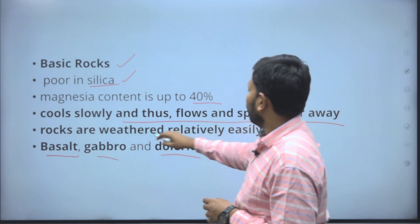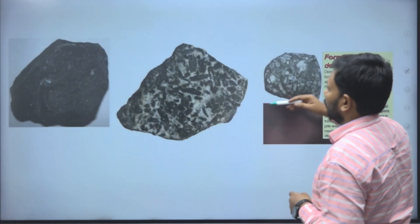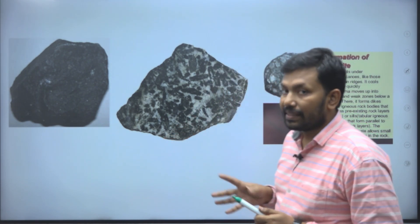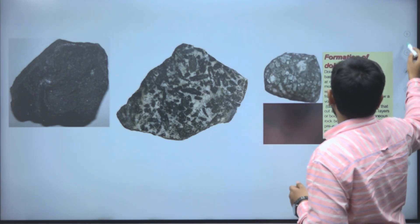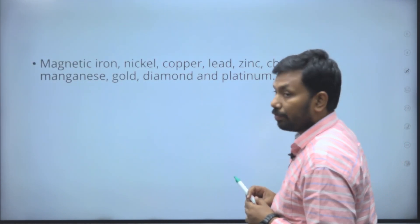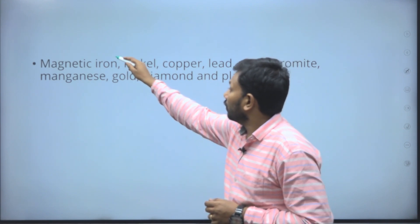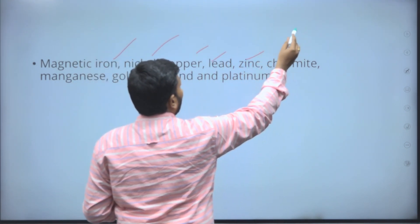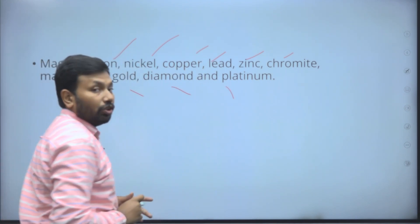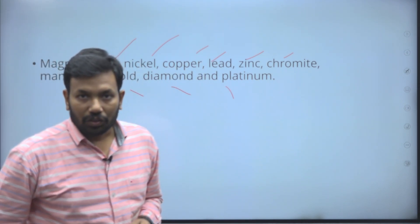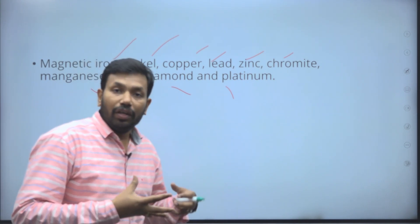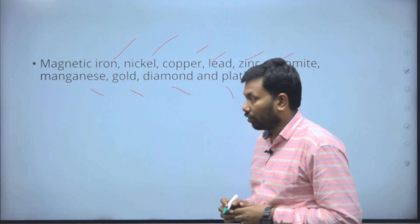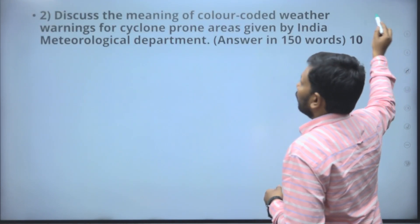I will show you pictures for your understanding of how these rocks look. You can write about their texture. Also, because the question asks about importance, note the chemicals present: nickel, copper, zinc, chromium, lead, manganese, gold, diamond, and platinum — all found in igneous rocks because high pressure and temperature cause chemical composition to form these types of minerals. This is very important content to include.